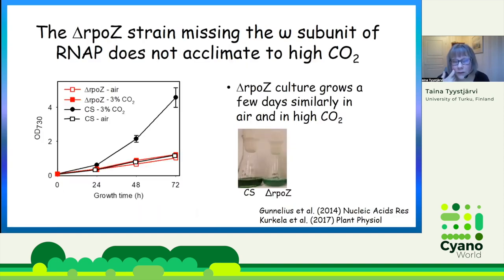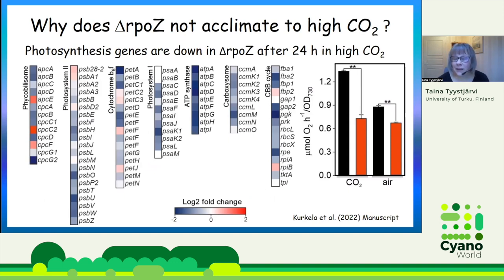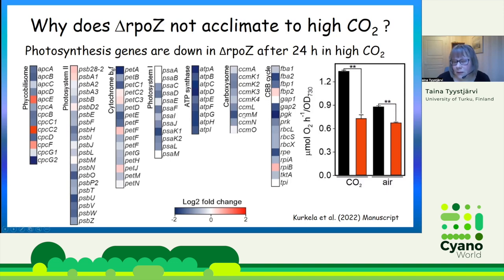Going back to Delta-RPOZ and why it does not grow well in high CO2 — we compared gene expression in Delta-RPOZ to that of the control strain. We noticed a group of genes that showed clear differences. The first group are the photosynthetic genes: after 24 hours in high CO2, phycobilisome genes were mainly downregulated, many photosynthetic genes were downregulated, cytochrome b6f complex genes were downregulated, photosystem 1 genes were downregulated, ATP synthase genes were really highly downregulated, carboxysome genes were slightly downregulated.